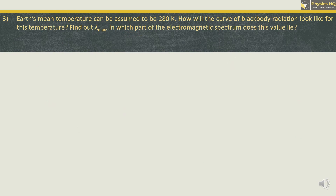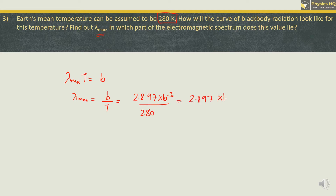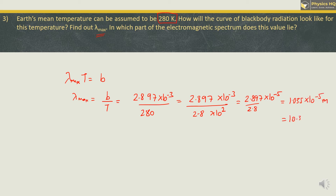Earth's mean temperature can be assumed to be 280 Kelvin. We will use Wien's displacement law: λmax·T = b, where b is Wien's constant. So λmax = b/T = 2.897 × 10⁻³ / 280 = 2.897 × 10⁻³ / (2.8 × 10²) ≈ 1.035 × 10⁻⁵ meters, which is 10.35 micrometers. Wavelengths in the micrometer range fall in the infrared region.